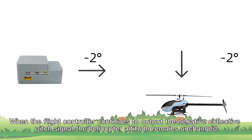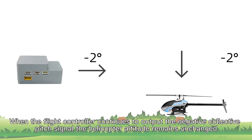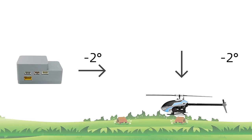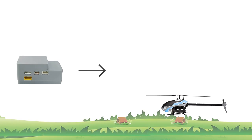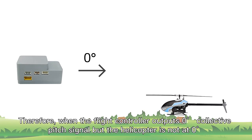When the flight controller continues to output a negative collective pitch signal and the helicopter altitude remains unchanged, the flight controller believes the helicopter has landed and triggers automatic flame out.